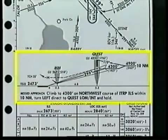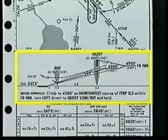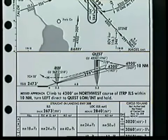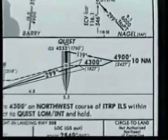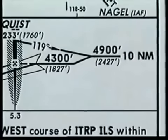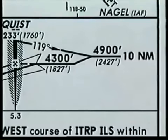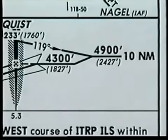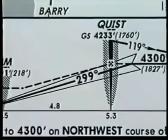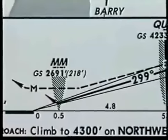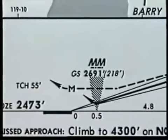Now let's discuss the profile view on the Terps California chart. This section of the approach chart is a side view of the procedure, but is not drawn to scale like the plan view. The profile view simply depicts the altitudes, fixes, distances and magnetic courses to be flown. The dominant feature is the heavy solid line representing the flight path. Before glide slope interception, this line represents the flight path for both the precision and non-precision approach. From the glide slope interception point, it only represents the precision approach. The non-precision approach path is depicted by a dashed line.